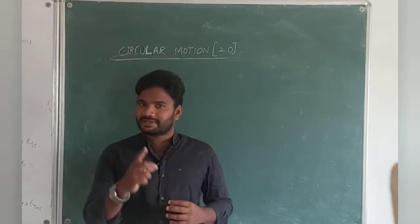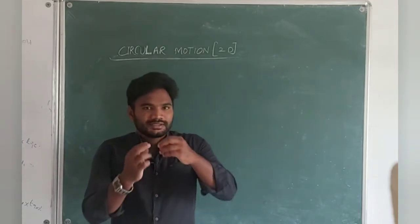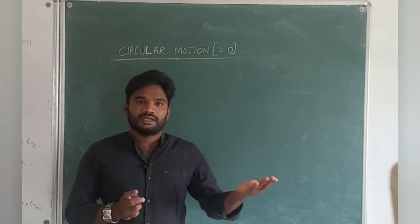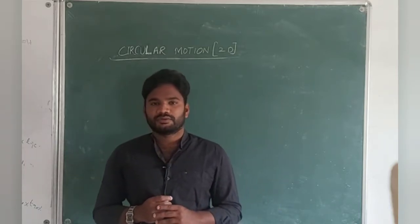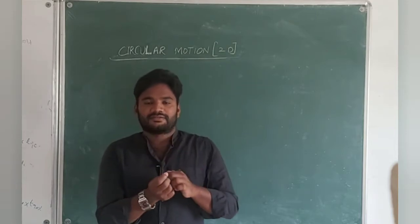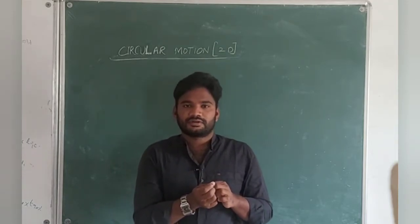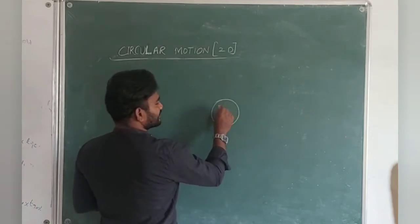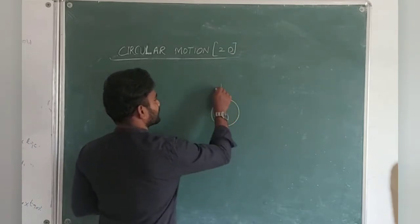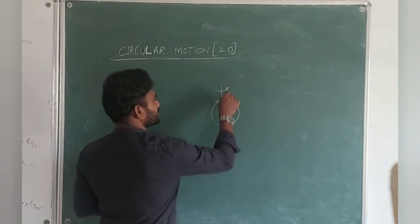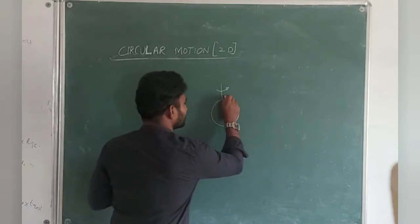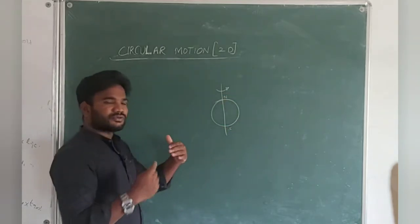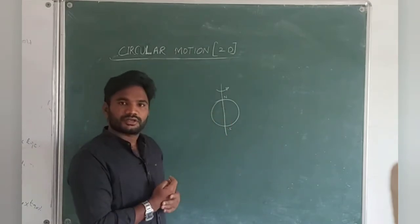Here is one interesting fact. Earth rotates itself, and because of that rotation — the axis passing through the north pole and south pole — we say the earth is in rotatory motion. That is why we are getting day and night.